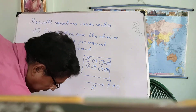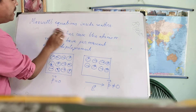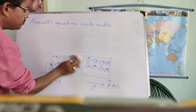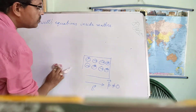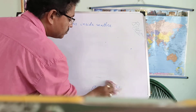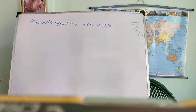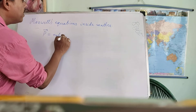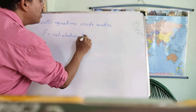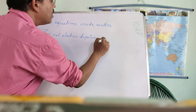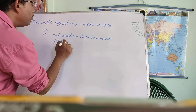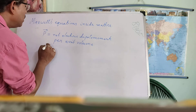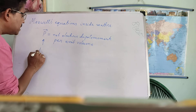When the dielectric is polarized, we define a quantity called the polarization vector, which is the electric dipole moment per unit volume. We define a quantity P — this is the net electric dipole moment per unit volume — and this is called the polarization vector.